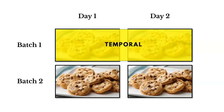If we look at variation across days, that's temporal variation. Maybe all of day one's cookies are overcooked and all of day two's cookies are undercooked. We'd ask: what changed between days? Maybe we had a different chef or baker. By understanding these three sources — within unit, between unit, and temporal — we can start narrowing down the inputs contributing to our problems.